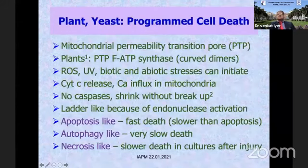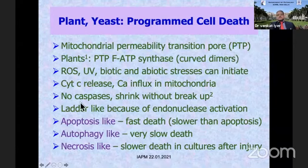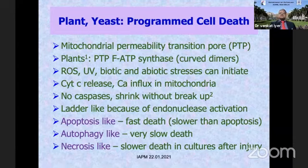In the last 20 years, programmed cell death has been discovered in many other organisms. Evolutionary biologists have found it in plants and yeast where we previously thought apoptosis does not happen. Here the central area is the mitochondrial permeability transition pore — the mitochondrion is the key. There are no caspases; there is cytochrome C release and calcium influx into mitochondria, and stresses like reactive oxygen species. These have been divided into apoptosis-like, autophagy-like, and necrosis-like types depending on the speed with which these programmed cell deaths occur.